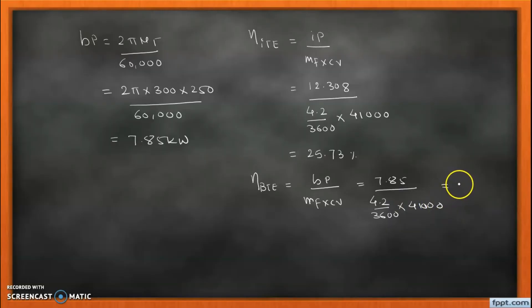Now for the mechanical efficiency, we know that it is brake power upon indicated power. So brake power is 7.85 and indicated power is 12.308. So mechanical efficiency we get 63.81%. So in this way we get the mechanical efficiency, indicated thermal efficiency, brake thermal efficiency which is asked in the numerical.